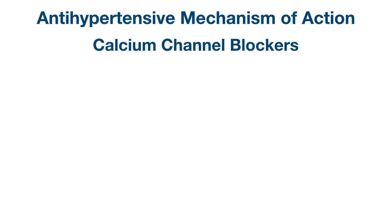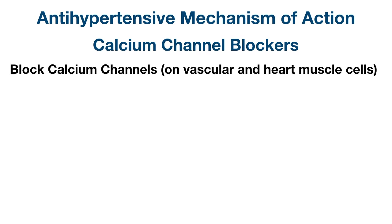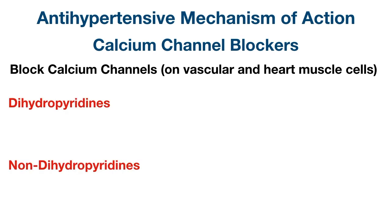The next antihypertensive class is calcium channel blockers. As the name suggests, they block calcium channels primarily located on vascular smooth muscle cells and cardiac muscle cells. There are two main types: dihydropyridines, which predominantly act on blood vessels with less effect on the heart, and non-dihydropyridines, which act mainly on the heart with less effect on blood vessels.